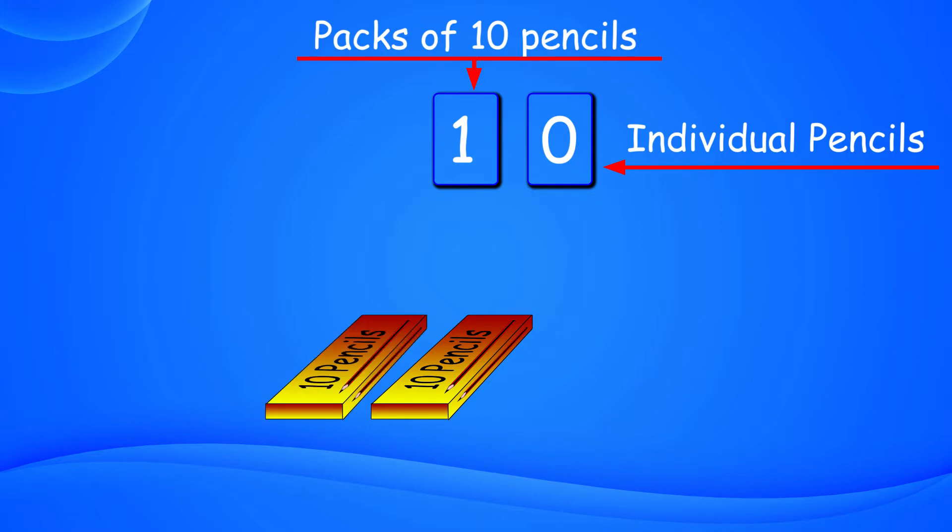If we have 2 packs, write 2 in the number box and 0 in the box showing number of individual pencils, as we do not have any single pencil. Now, if we collect 3 pencils, we write 3 in the box showing number of individual pencils. We have 2 packs of 10 pencils and 3 individual pencils, total 23 pencils.